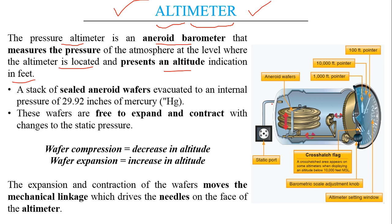The altimeter functions as a barometer used to find height. The word 'aneroid' means this barometer deals with the expansion and compression — or deformation — of a diaphragm. The altimeter has a stacked sealed set of aneroid wafers evacuated to an internal pressure of 29.92 inches of mercury (in Hg).